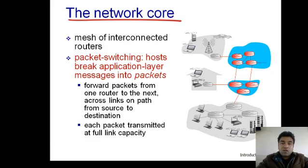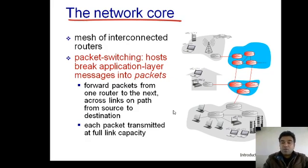As you can see on the slide, the network core is described as a mesh of interconnected routers used for the internet. They use packet switching: hosts break application-layer messages into packets and forward those packets from one router to the next across links on the path from source to destination. Each packet is transmitted at full link capacity.